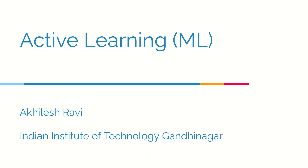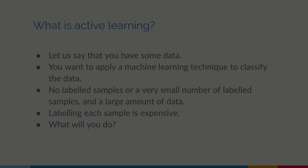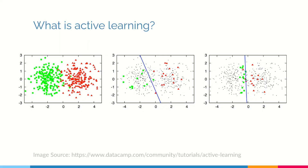Hello everyone, I'm Akhilesh and I will be talking about active learning, a concept in machine learning. Let us say that you have a lot of data to label and you want to run a machine learning algorithm on a big amount of data, but you don't have any labeled data. You have very little or no labeled data and labeling each sample is very expensive. Active learning is a concept you can use to label data optimally and still get good results after labeling less data.